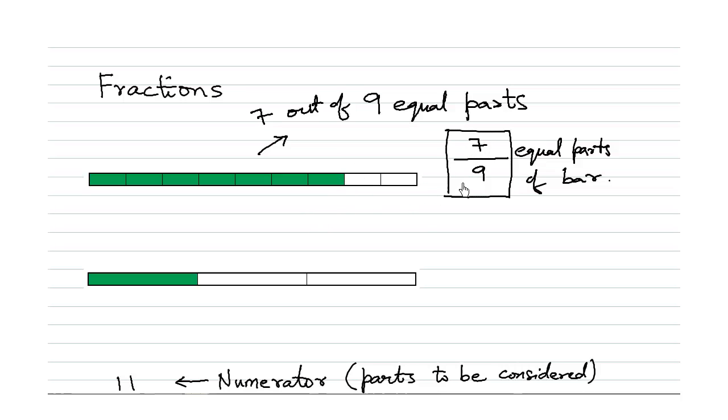So this seven over nine or seven upon nine is said to be a fraction. Similarly, let's say you have a chocolate and you are this time dividing the chocolate in one, two, three, three equal parts. Okay, and remember the parts need to be equal.